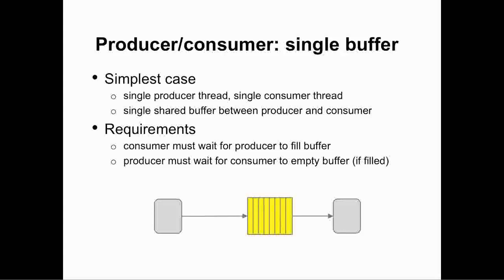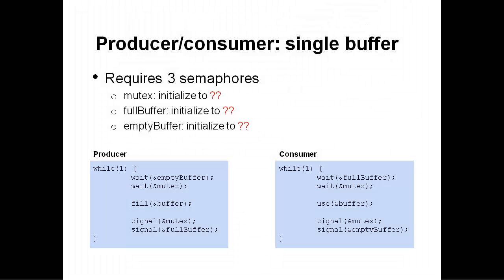Here is a very simple case: a single producer thread, a single consumer thread, and a shared buffer — indicated by the yellow bars in the middle. The requirement is that the consumer must wait for the producer to fill the buffer, and the producer must wait for the consumer to empty the buffer. The standard solution uses three semaphores: first, a mutex semaphore to protect access to the shared state (the data structure representing the buffer, perhaps an array); second, a counting semaphore called full buffer, used to indicate the buffer is full; and third, empty buffer, used to represent that the buffer is empty.